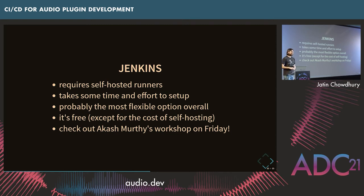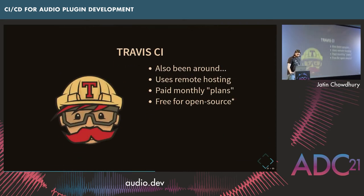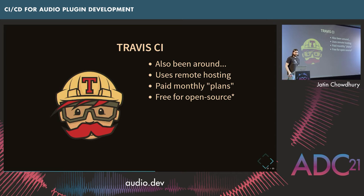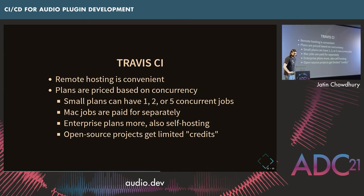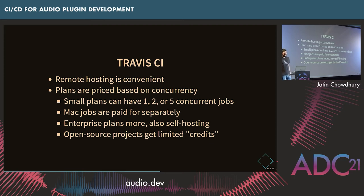Akash Murthy will be here on Friday doing a workshop showing how to set up a CI pipeline with Jenkins and AWS. Next is Travis CI, which has also been around a while and offers remote hosting — instead of running on a local machine or your own server, it runs on their servers. They claim to be free for open source projects, but last year they changed their pricing model so that open source projects get a limited number of credits, and once you run out you need to email them and ask for more. I ran out of credits in about a week and they didn't get back to me for two months, which is why I didn't make an example Travis workflow.